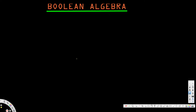In this video we are going to talk about Boolean algebra. In Boolean algebra, if you have a plus sign that means OR, and if you see a dot that means AND. Now let's look at some examples. Let's say we have a plus zero.